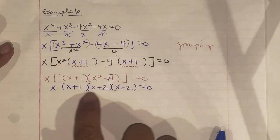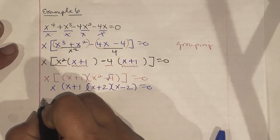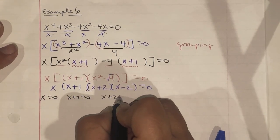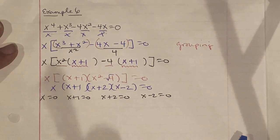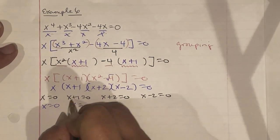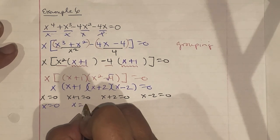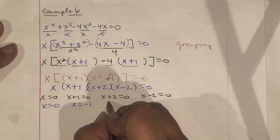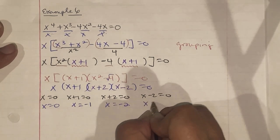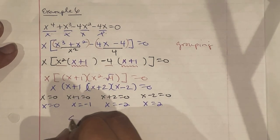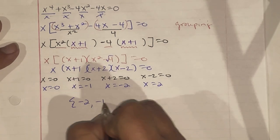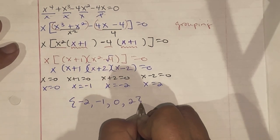Everything is now fully factored: x(x + 1)(x + 2)(x - 2) = 0. Setting each factor equal to zero and solving: x = 0, x + 1 = 0 → x = -1, x + 2 = 0 → x = -2, and x - 2 = 0 → x = 2. Listed least to greatest, our four solutions are {-2, -1, 0, 2}.